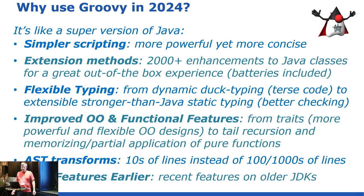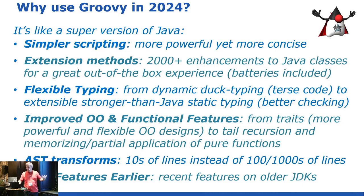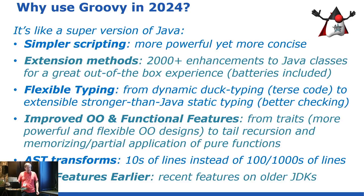If I was giving an elevator pitch of what are some of the good things of Groovy compared to other options — Java's got excellent functionality, we've got Kotlin, Scala, and a few various options. These are some of the things where I think Groovy actually is better for certain scenarios: simpler scripting, a whole bunch of really useful methods, flexible typing so you can have very dynamic or much stronger-than-Java typing, and it's all extensible. There are also great features for OO design and functional programming.